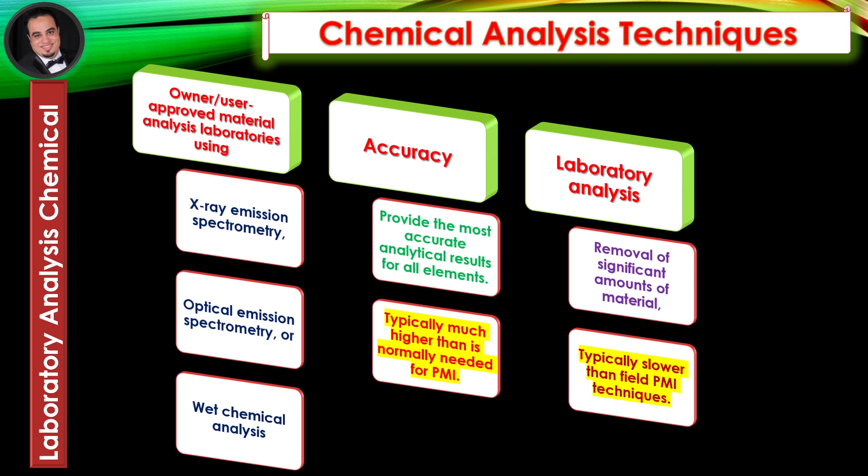Chemical Analysis Techniques: Laboratory Chemical Analysis. Owner-user approved material analysis laboratories using X-ray emission spectrometry, optical emission spectrometry, or wet chemical analysis can provide the most accurate analytical results for all elements. The accuracy is typically much higher than is normally needed for positive material identification. Laboratory analysis may involve the removal of significant amounts of material and is typically slower than field positive material identification techniques.